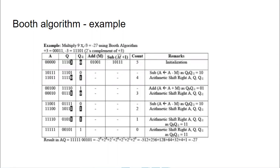Now we'll see Booth's algorithm with an example: 9 × (−3). There is a negative number here. If you compute 9 × 3 it is 27, and since one number is negative the answer should be minus 27. Here, 9 is the multiplicand placed in M, and minus 3 is the multiplier placed in Q.